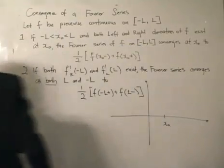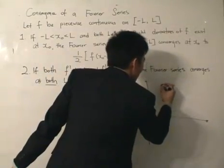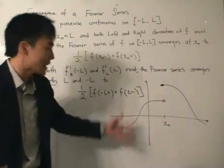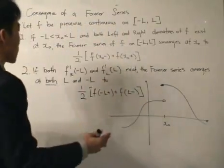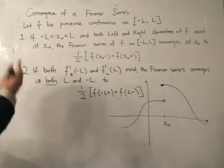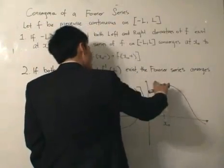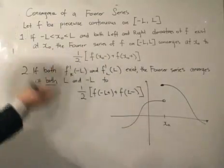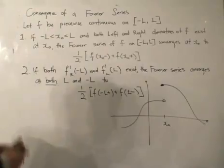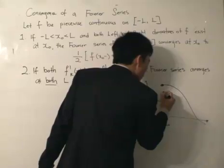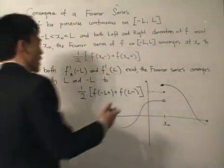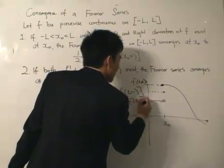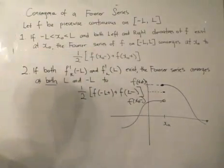Let's say x0 is here and we have a certain curve that is discontinuous at x0 — so we get a point here and a point there. This could be a function for which we want to find the Fourier series. So x0 is discontinuous at this point; there is no proper derivative. However, the convergence theorem tells us that if we can find the left and right-hand derivatives — which should not be a problem — the Fourier series will converge to a certain point. That point is found by taking the left and right-hand limits at x0 and dividing by 2. You can think of it as the average: this is the right limit x0+, and this is the left limit x0−. The Fourier series will converge to that point.